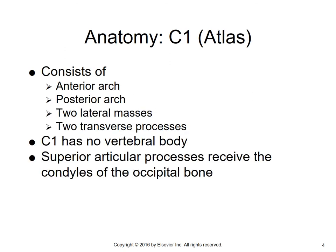A little bit about the anatomy of the atlas: you have the anterior arch, posterior arch, so there's no body, two lateral masses, and two transverse processes. C1 has no vertebral body. The superior articular processes receive the condyles of the occipital bone of the skull.